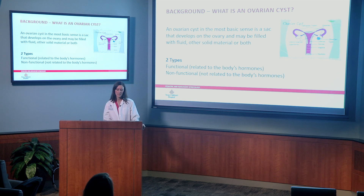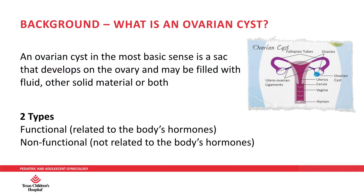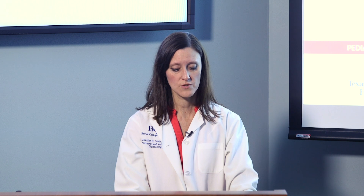The most common question that we get is: what is an ovarian cyst? In the most basic sense, an ovarian cyst is a sac that develops on the ovary, and it might be filled with fluid, solid material, or both. There are two types of cysts: one may be functional and related to the body's hormones, and one is non-functional and not related to the body's hormones at all.